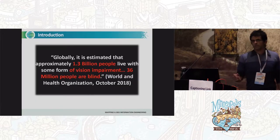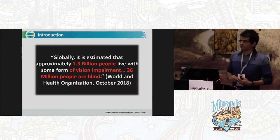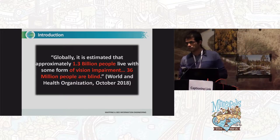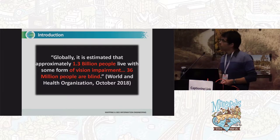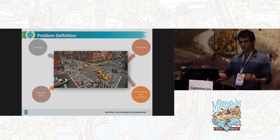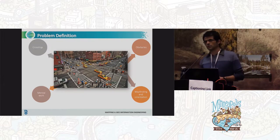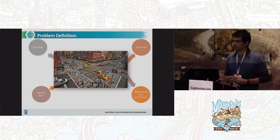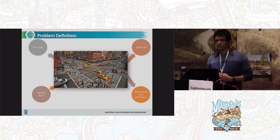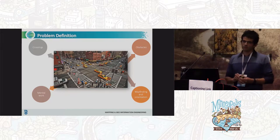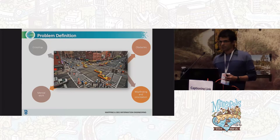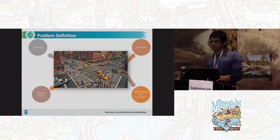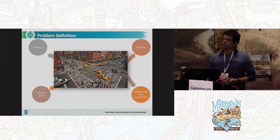1.3 billion people have some kind of vision impairment, and 36 million of them are completely blind. When they go out, instead of using their eyes they need to use other senses like hearing and smell, which require much more mental work. They also need to avoid obstacles along the way, and when they reach a road crossing they need to understand exactly where and when to cross by listening carefully to traffic patterns.